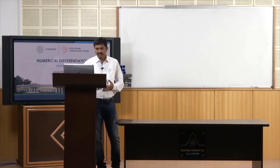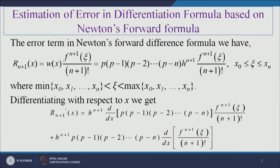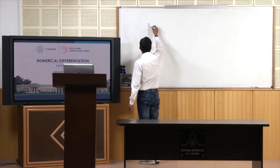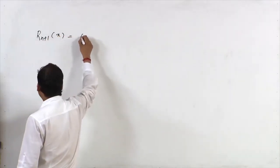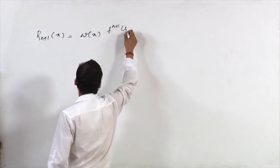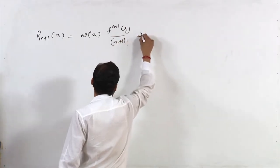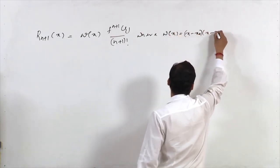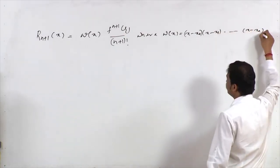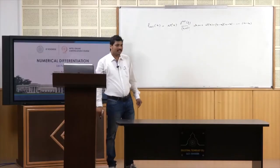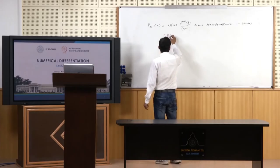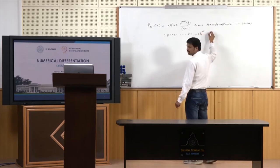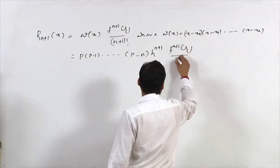If you go for error term analysis based on Newton's forward difference formula, the error term for Newton's forward difference approximation is written in the form R equals omega(x) times f^(n+1)(zeta) divided by (n+1) factorial, where omega(x) is written as (x - x0)(x - x1)...(x - xn).